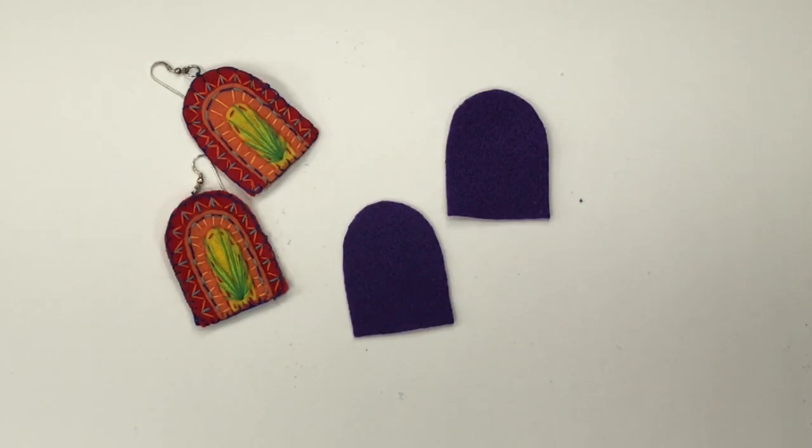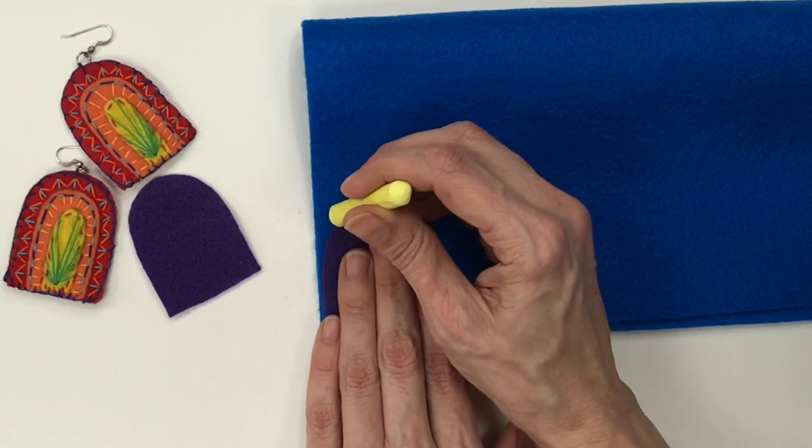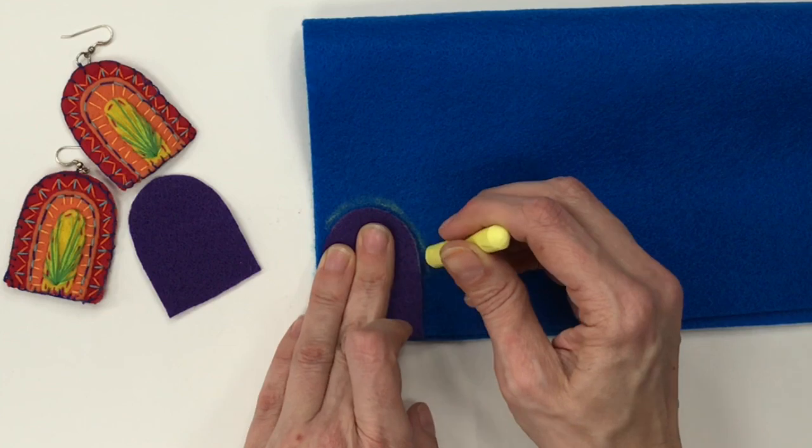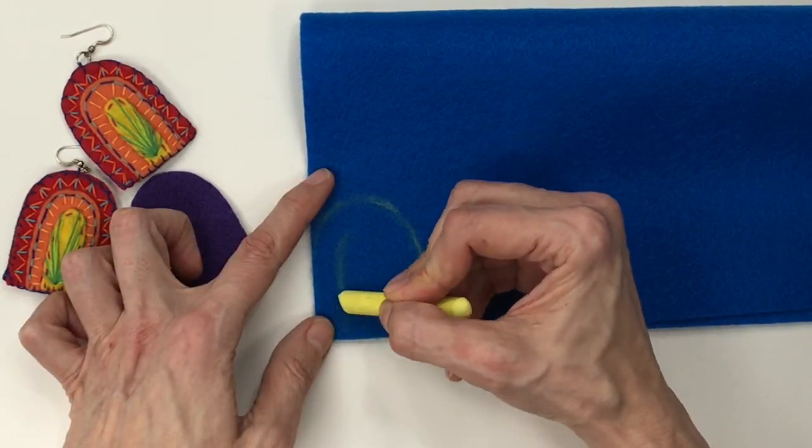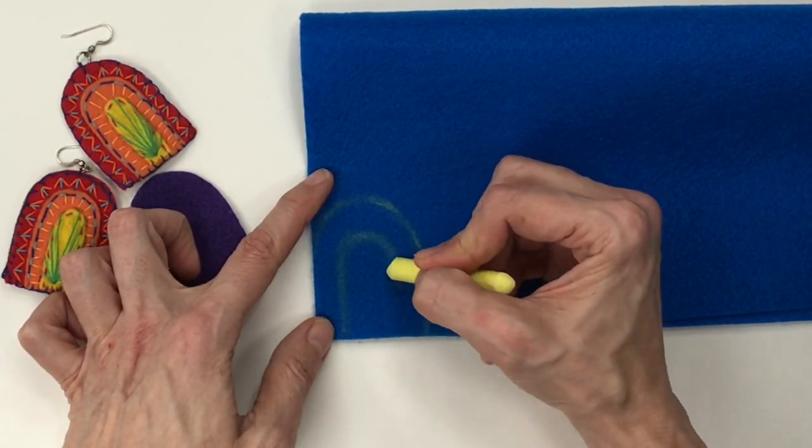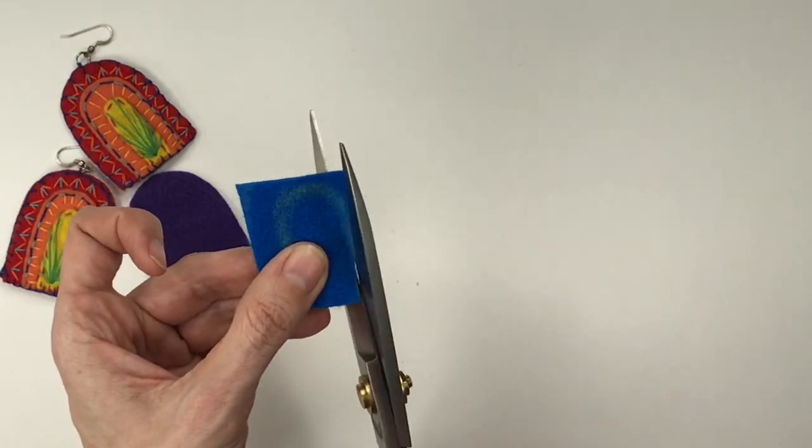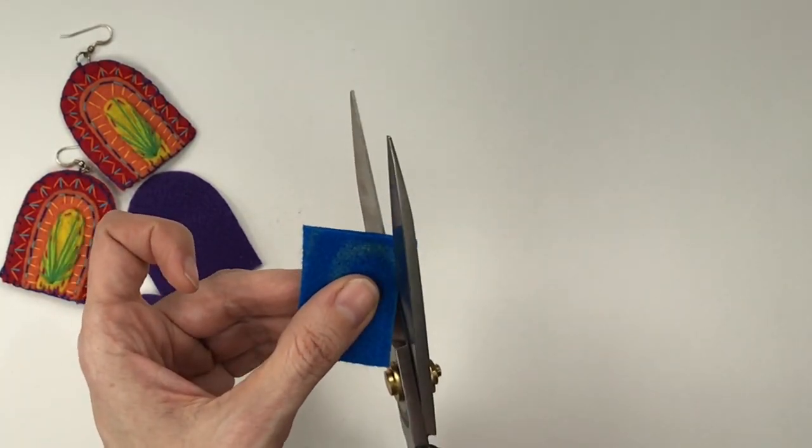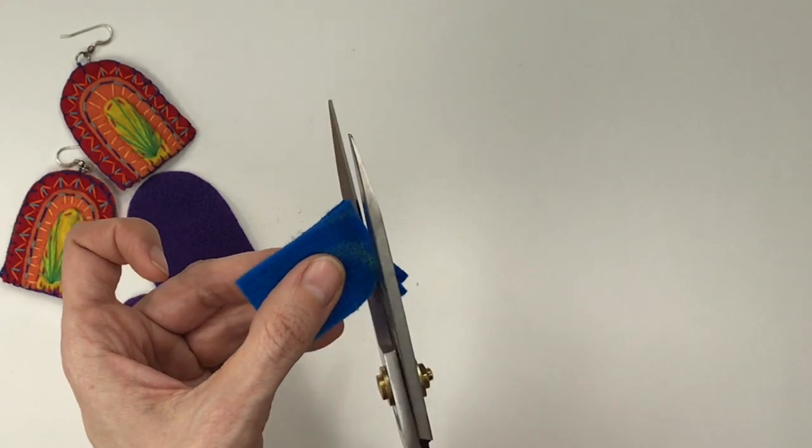When you're making these earrings today with me, you're going to be learning a ton of different embroidery stitches, so think of these little earrings as a wee bit of a sampler. When you're done with the outside of the rainbow, go ahead and cut one smaller arch and then one even tinier.